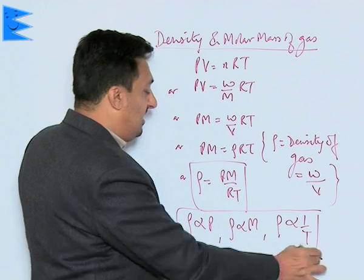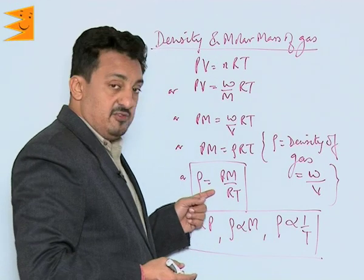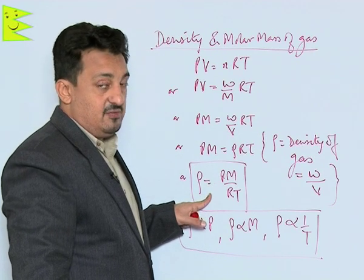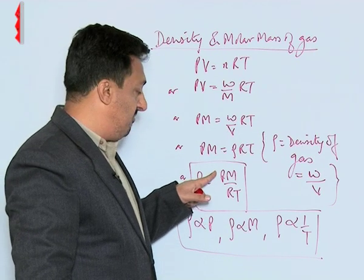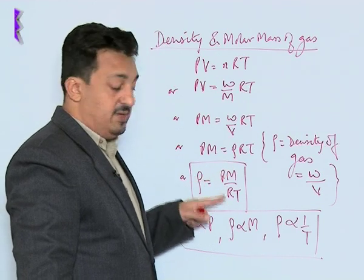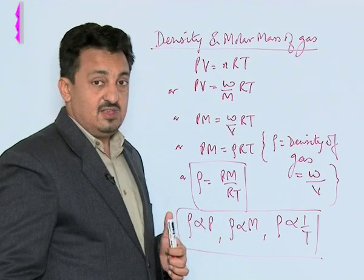These are the three very clear cut observations we can make out from this formula, and that is the formula of finding out the density of a gas. It will be in terms of pressure and molar mass: PM over RT. That is how we can find out the density of any gas.